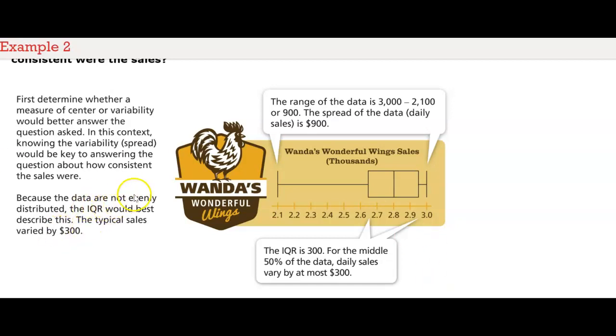Because the data are not evenly distributed, the IQR would be best to describe this. The typical sales varied by $300. Because they have this data way over here, that means more of the data stays over on this side. That's why the inter-quartile range is better than the range for the whole set of the data.